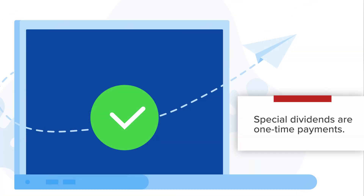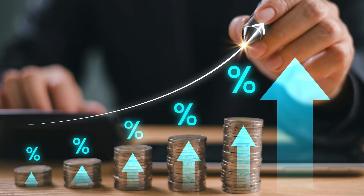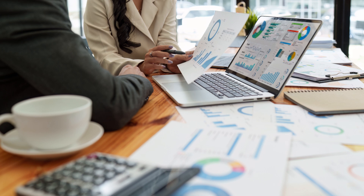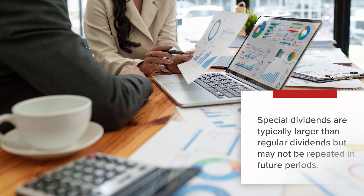In contrast, special dividends are one-time payments made by a company, typically after a significant event or when the company has an unusually high profit. Special dividends are less predictable than regular dividends and are often seen as a bonus for shareholders. They are not part of a company's ongoing dividend policy and are usually paid when the company has surplus cash or after the sale of a major asset. For example, if a company sells a large business unit or experiences a windfall profit, it may declare a special dividend to distribute some of these extra funds to shareholders. Special dividends are typically larger than regular dividends but may not be repeated in future periods.